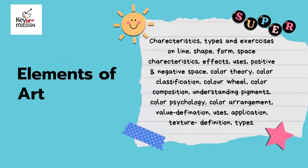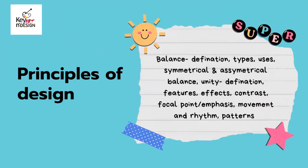Elements of art covers line, shape, form, and space — their characteristics, types, and exercises — including positive and negative space. Color theory includes color classification, the color wheel, color composition, understanding pigments, color psychology, and color arrangement. Value definition, uses, and application; and texture definition and types.